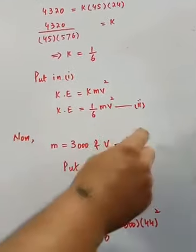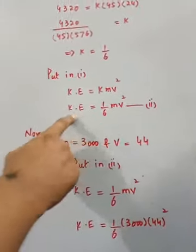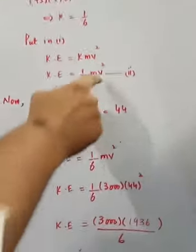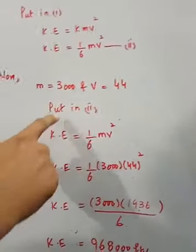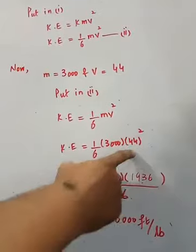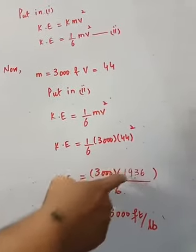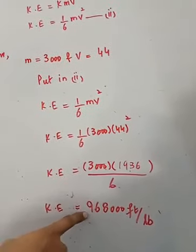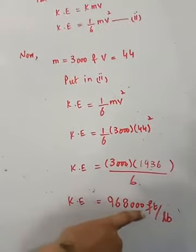From the second set, find the value. k is known, m is given, v is given. Just put the values in equation 2. 44 squared means 44 times 44, which is 1936. Divide to get kinetic energy of 968,000 feet-pounds.